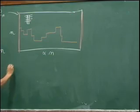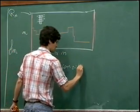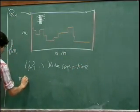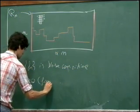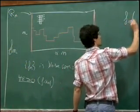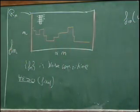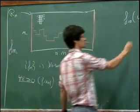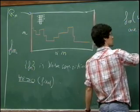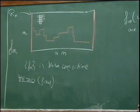What does it mean that F_n is noise sensitive? It means that for any fixed level of noise epsilon, asymptotically as n goes to infinity, the event F_n(omega) and F_n(omega_epsilon) decorrelate completely — they become independent. This can be written as: the covariance of this observable with the slightly noised observable goes to zero.